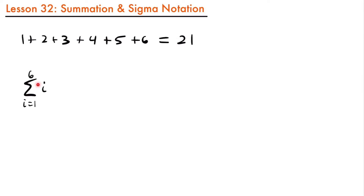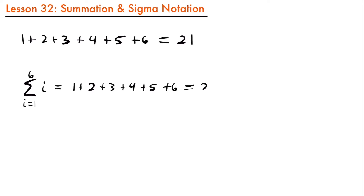Think of this sigma as meaning the sum of the values for i from this lower value to this upper value. So we're looking at 1 through 6 and we're going to be adding them together. This would be the same calculation as 1 plus 2 plus 3 plus 4 plus 5 plus 6, which is still equal to 21.